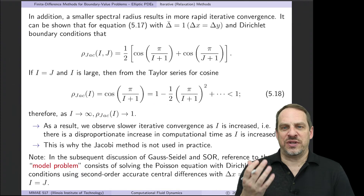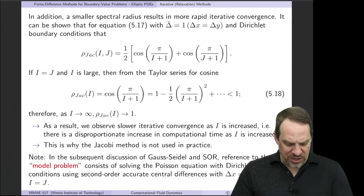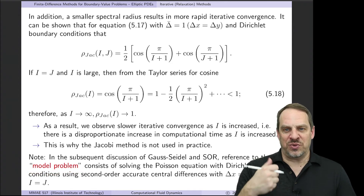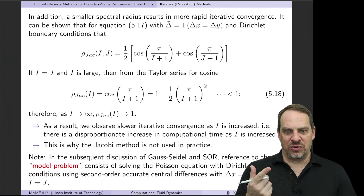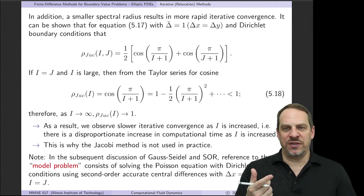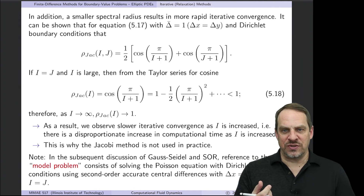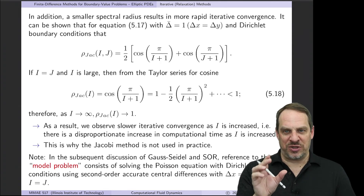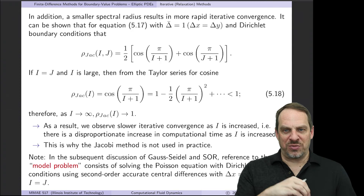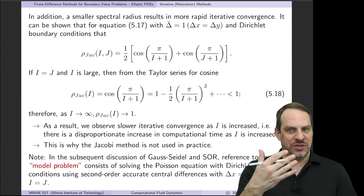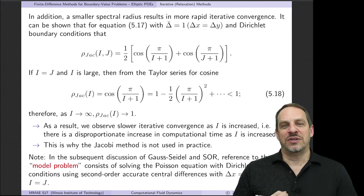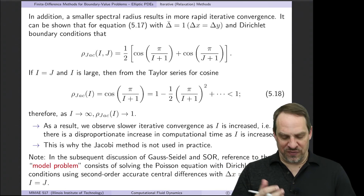When I use the phrase 'model problem,' I mean: the Poisson equation with second-order accurate central difference approximations, Δx = Δy, Dirichlet boundary conditions, and Î = Ĵ. This is a specific special case. Results derived for the model problem do not necessarily apply to other problems, so we must keep that in mind going forward.